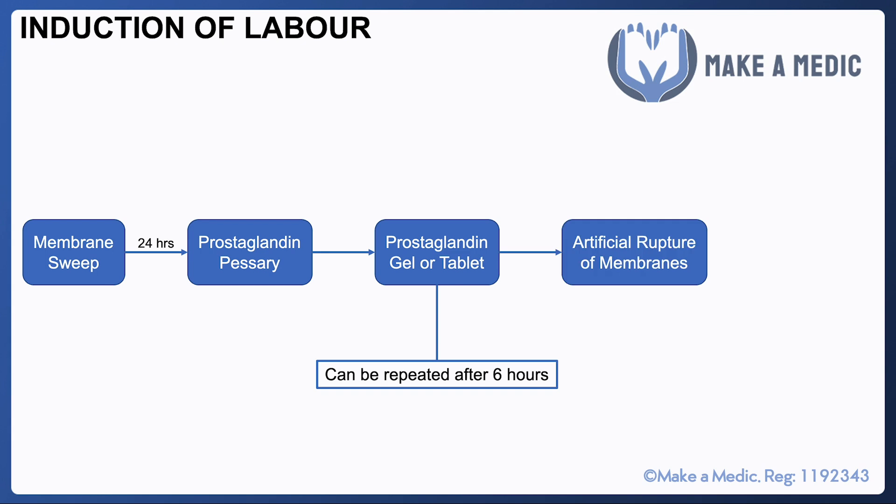If all of these measures are unsuccessful, then artificial rupture of membranes may be considered. This involves using something called an amnihook, which is a device that is inserted into the vagina through the cervix and is used to physically break down the membranes. A bit like the membrane sweep but at a much higher level, the rupture of the membranes triggers a massive surge of hormones that can trigger labor and make the labor progress faster and make the uterus contract down harder.